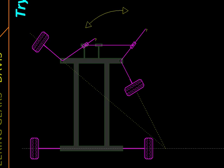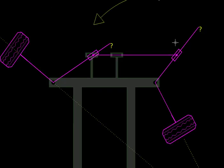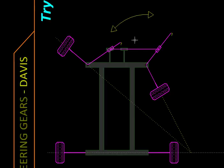Unfortunately, this mechanism has its drawbacks — it has too many sliding joints, which are going to cause wear. Once the parts have worn out and lost their accuracy, the steering condition may not be met very accurately. So in practice, this is not a very commonly used mechanism. Instead, people use Ackermann's linkage, which we'll see now.